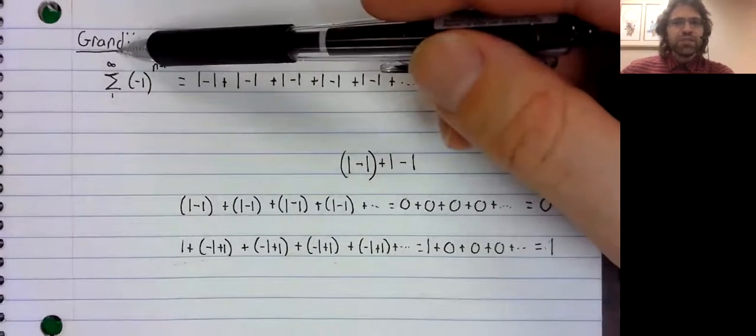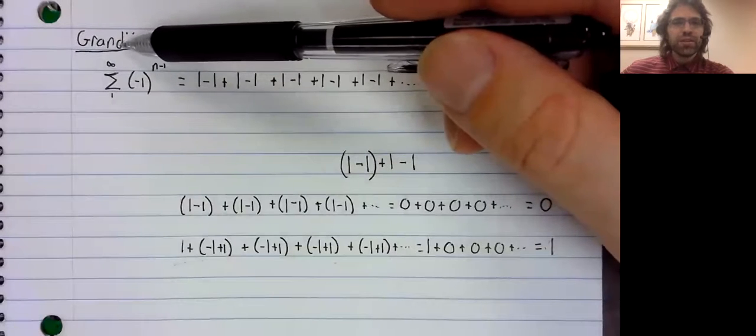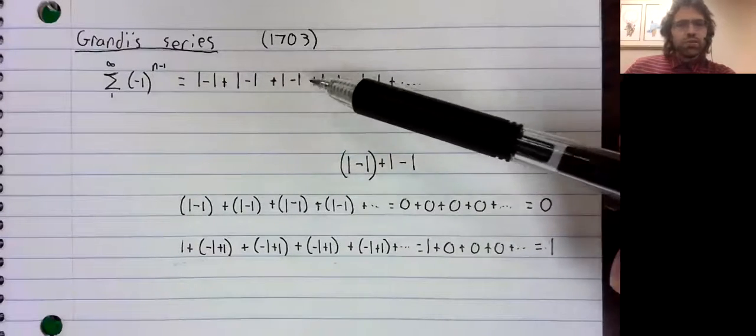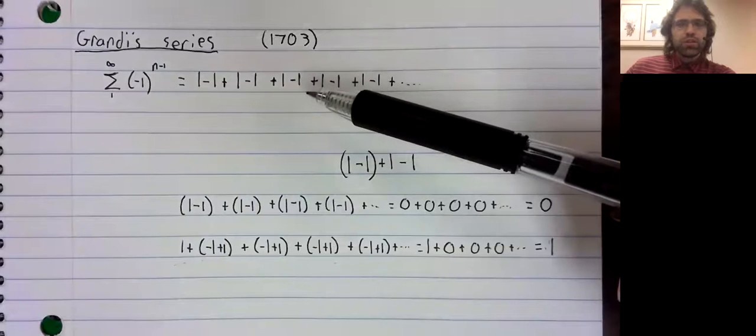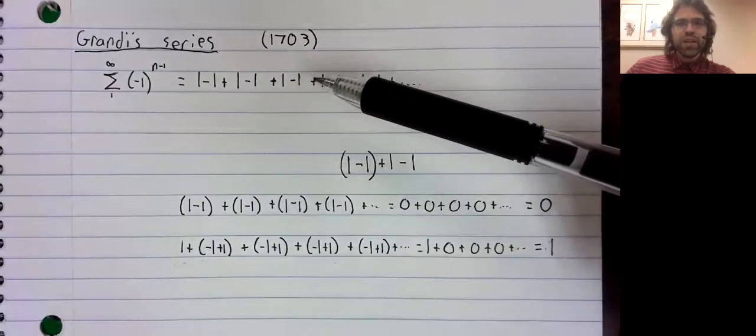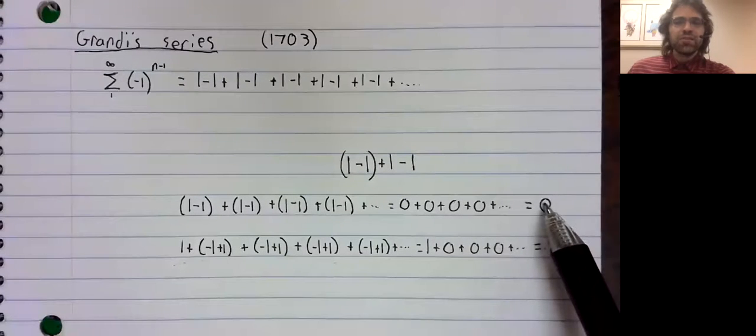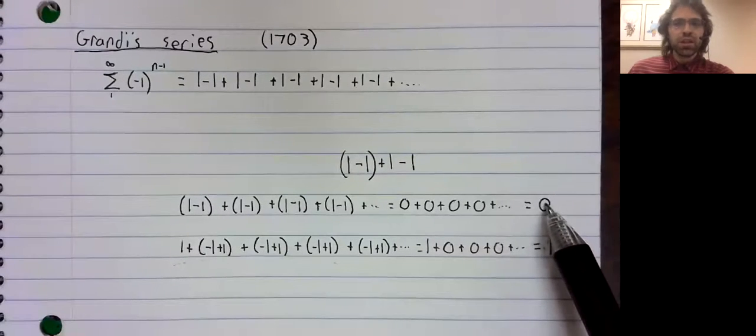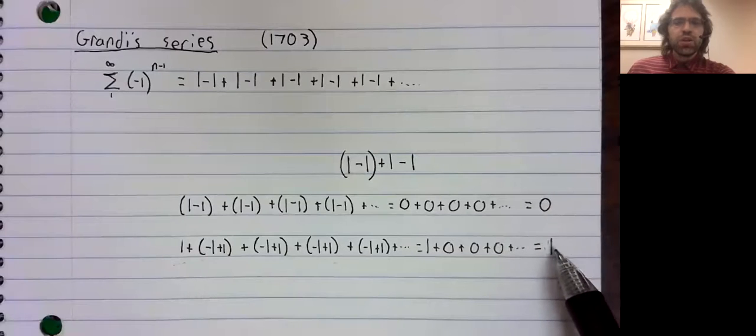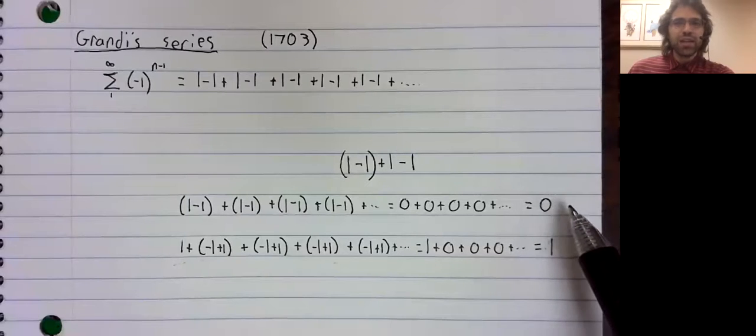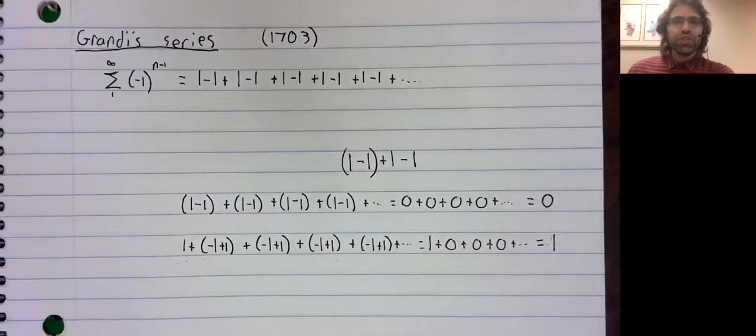Grandi was a priest as well as a mathematician, and he imbued the series with religious significance. To him, the idea that we can take something that equals nothing and make it equal something just by putting in parentheses was analogous to God's creation of the earth ex nihilo, that is, the creation of the earth from nothing.